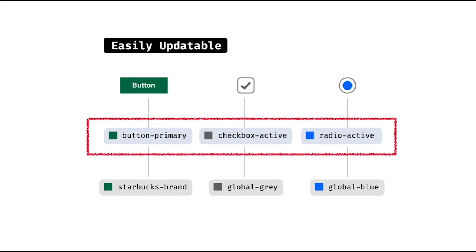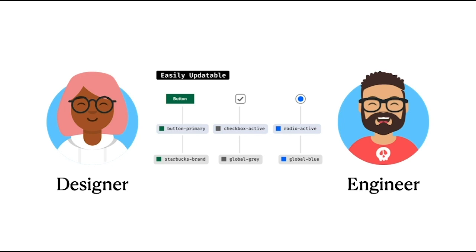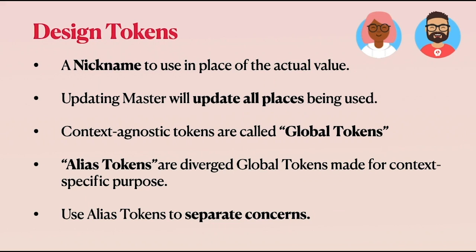What we want to do is compartmentalize each component and assign respectively a unique token. This way, it's easier to update by simply reassigning a new token to this context-specific token. These context-specific tokens created for each component are called alias tokens. The reason we do this is to separate the concerns between each of the components and to make them truly modular. Instead of linking everything to the global token, we create alias tokens that add a cushion in between and keep things modular and efficient.